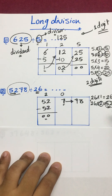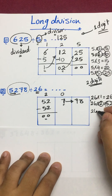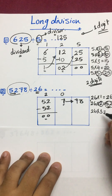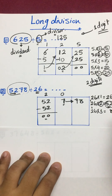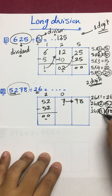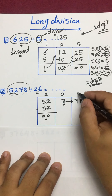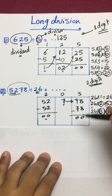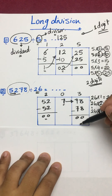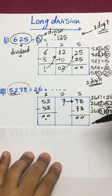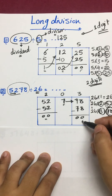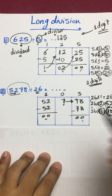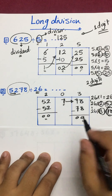78 does not exist in the table. We continue: 26 times 3. 3 times 6 is 18, write 8 and carry 1; 3 times 2 is 6, plus 1 is 7. So 26 times 3 equals 78 — we get the exact number. We take 78 and 3: 3 up, 78 down. Take a line and subtract — 0. In long division, we must get 0 in the last place. For that, the result is 203.